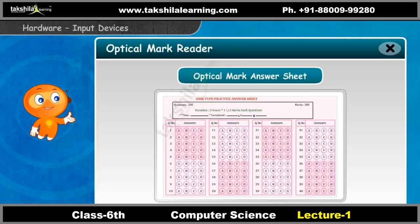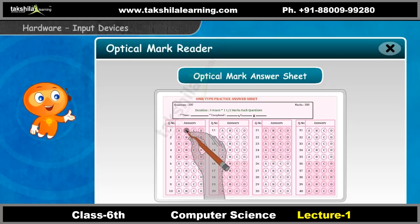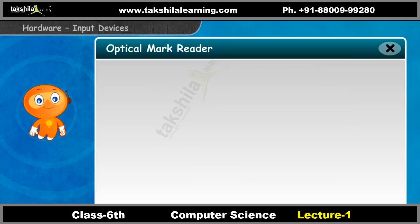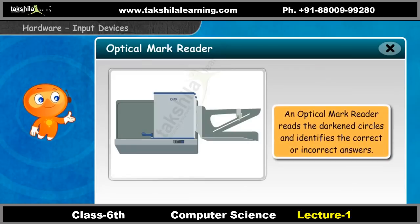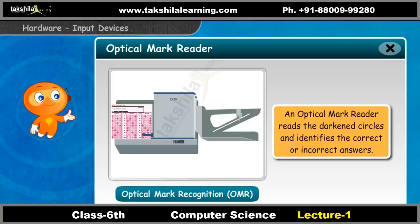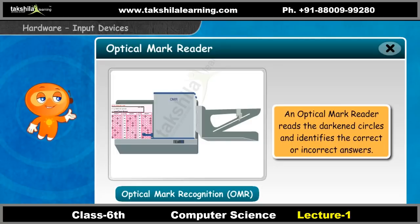Nowadays, competitive exams are conducted using optical mark answer sheets. Students need to darken the correct circle with a dark pencil or ink in their answer sheet. An optical mark reader reads the darkened circles and identifies the correct or incorrect answers. This technology is called optical mark recognition, or OMR.